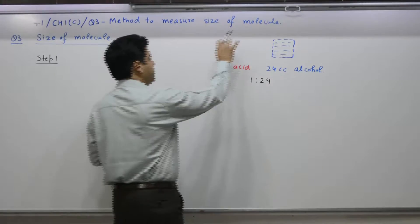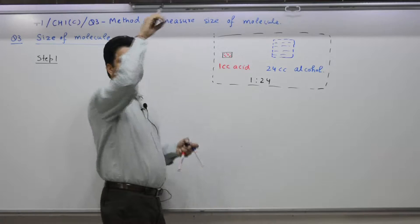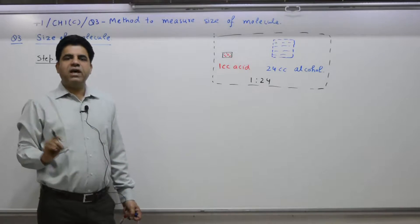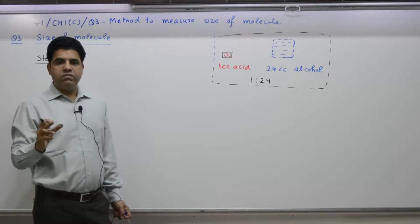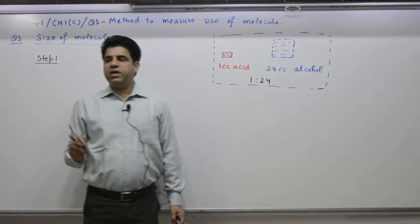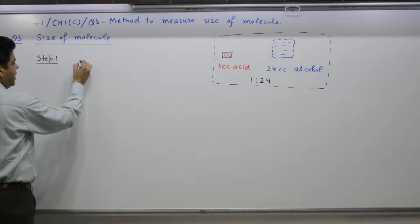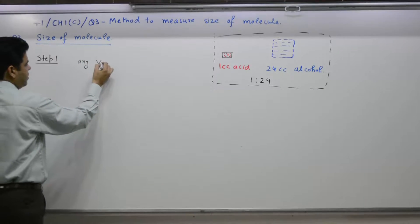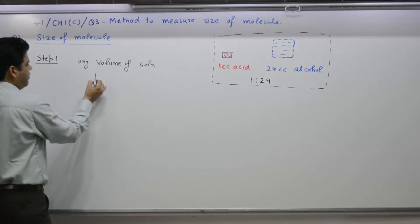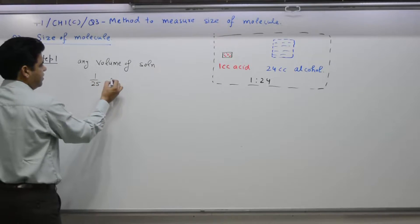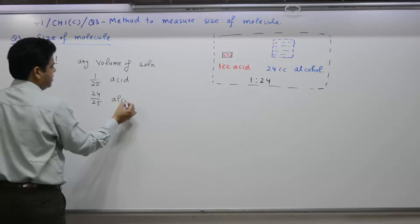So if you take this solution and take 1 drop out of it, that drop will have what part? 1 by 25 of the total will be acid, and 24 by 25 will be alcohol. So step number 1 means that any volume of the given solution will have 1/25 acid and 24/25 alcohol.